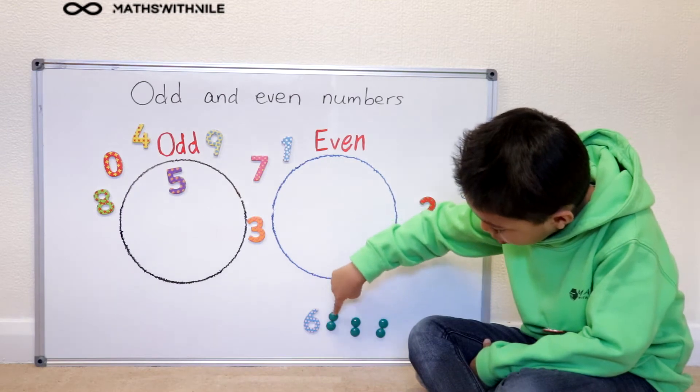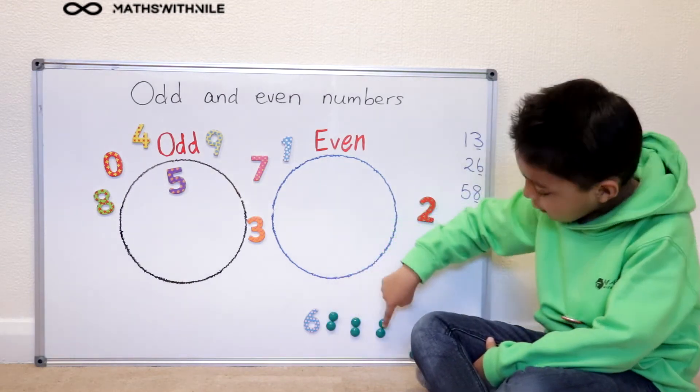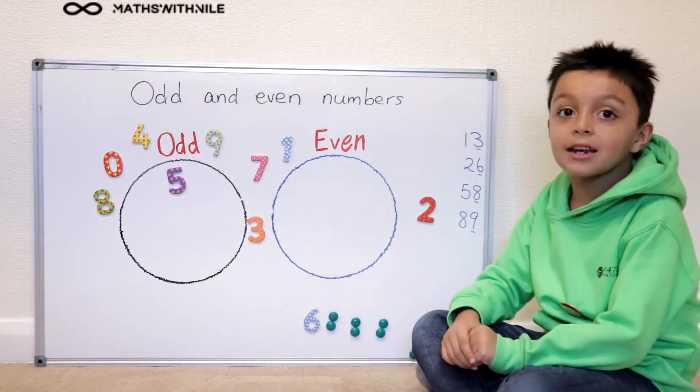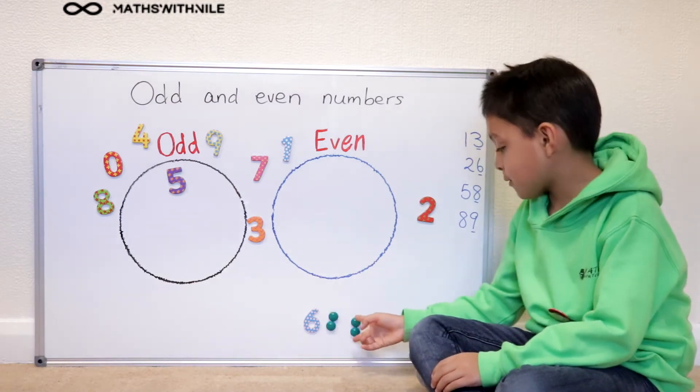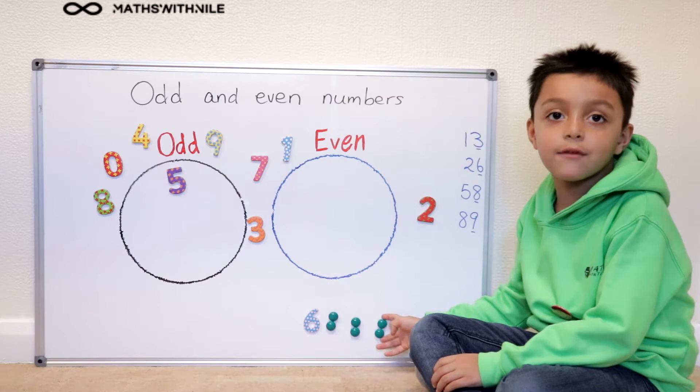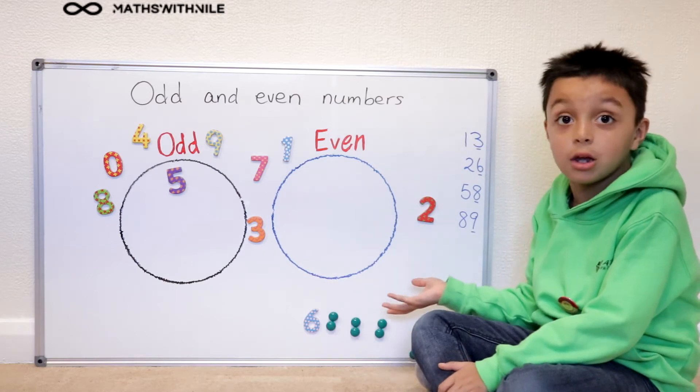So we got one, two, three, four, five, six. And there's another way to do that. Two, four, six. If it's an even number, you can count it in twos.